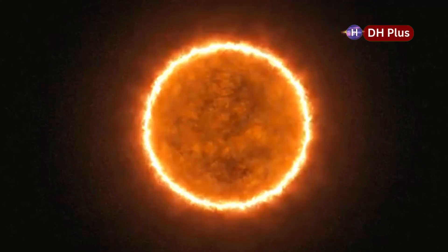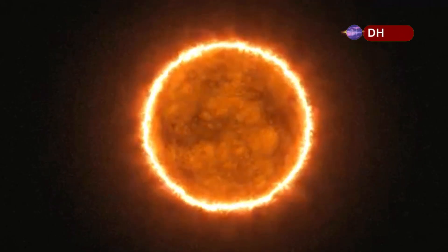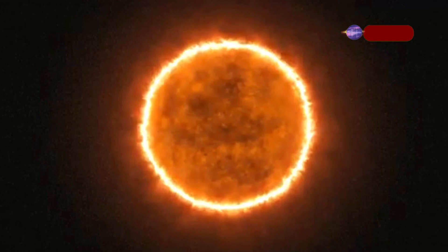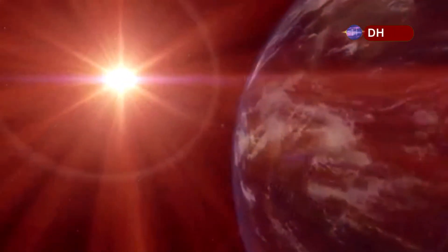WOH G64 has an estimated radius of 1,540 times that of the sun, meaning that if it took the place of the sun in the solar system, it would engulf the orbits of Mercury, Venus, Earth, Mars, and even Jupiter.